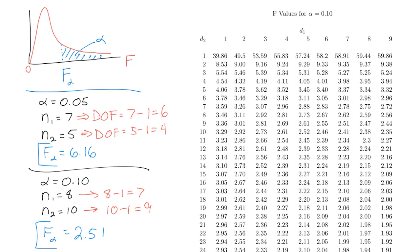Now you understand why there are so many pages in the back of the book — you have to find the page with the right level of significance, and possibly move to the next page if your degrees of freedom are large. Make sure you understand this because we're going to use it in every single problem. Follow me to the next lesson where we'll put it all together and do a real hypothesis testing problem.